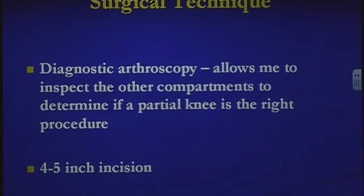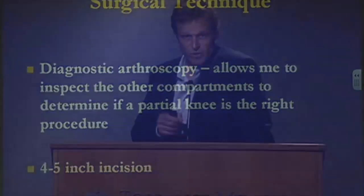For my surgical technique, I always put an arthroscope in the knee first to check it. I make a smaller incision for a partial knee and verify that the kneecap and opposite compartment are intact. If I do a partial knee and there's undetected arthritis on the other side, the patient won't do well. In about 5 to 10 percent of cases I do have to convert to a total knee. The scope also lets me look for meniscal tears, which I find in about 15 percent of cases.